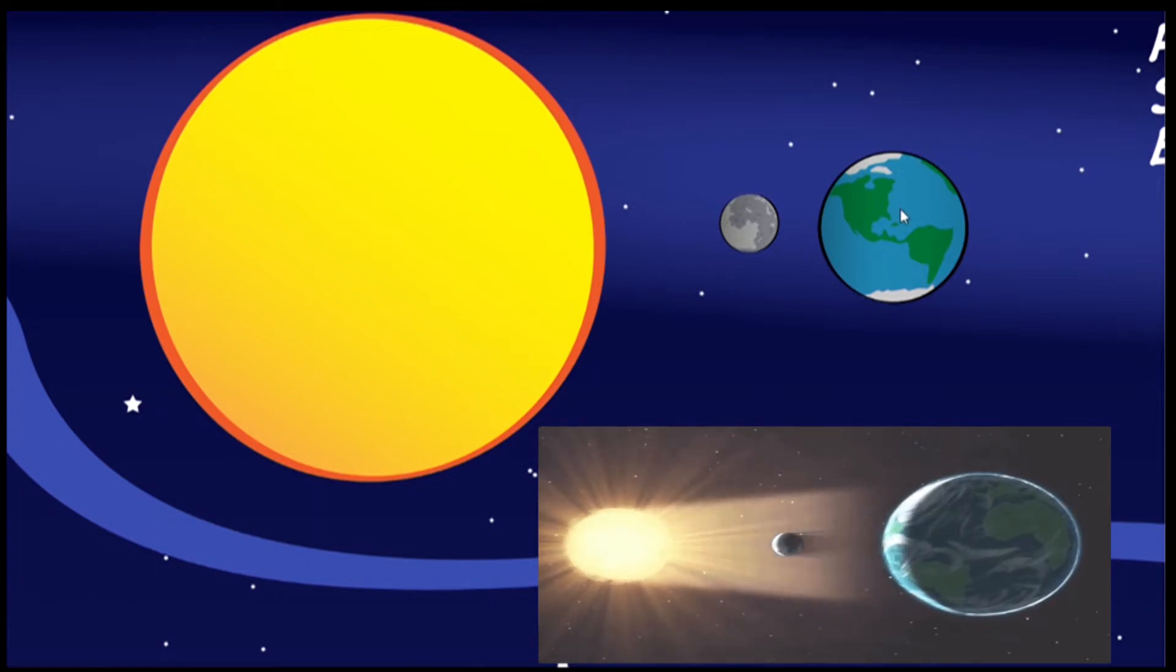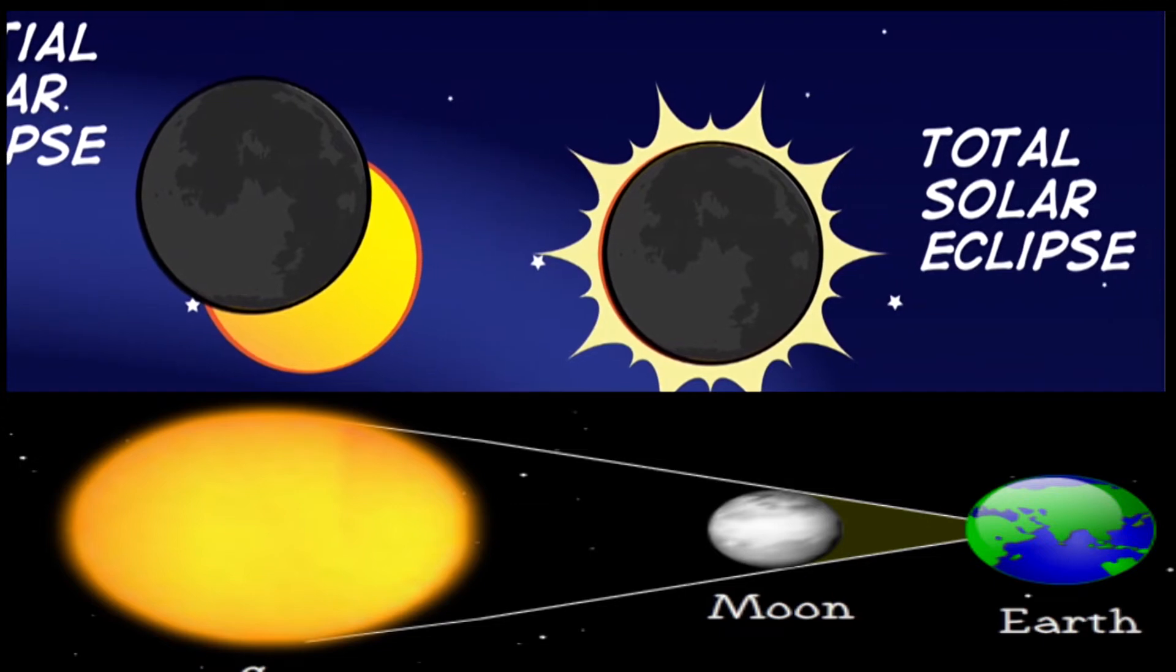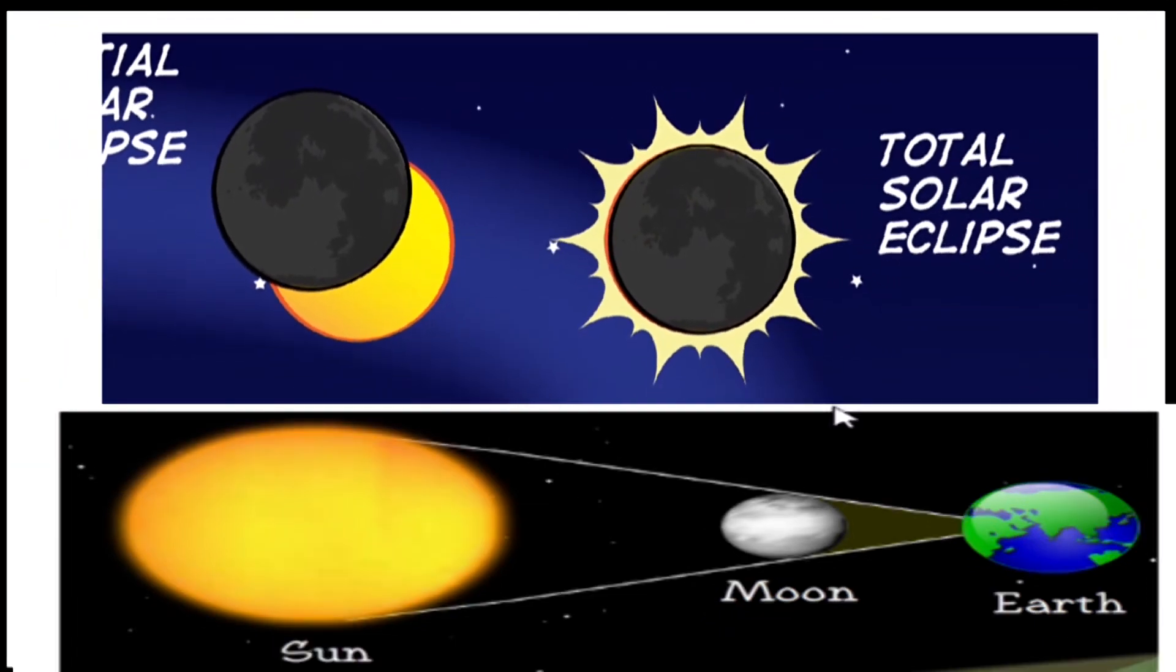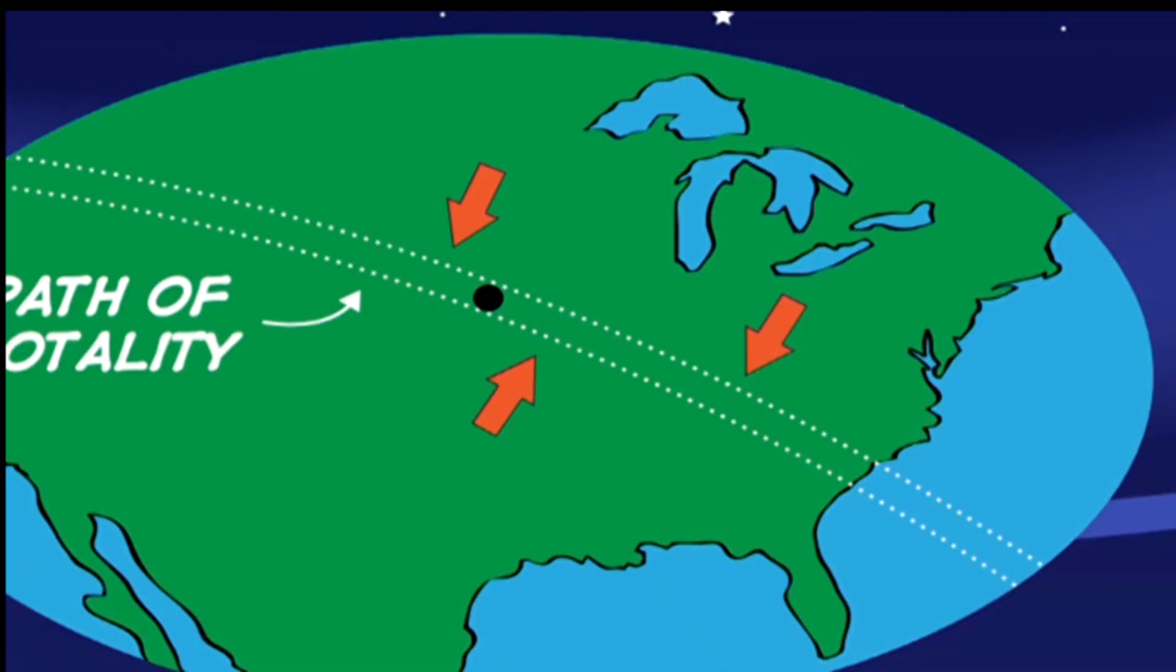There are two types of solar eclipse. The first one is partial solar eclipse, the second one is total solar eclipse. Sometimes the moon only blocks part of the Sun's light - this is called a partial solar eclipse. Other times the moon blocks all of the Sun's light - this is called a total solar eclipse.